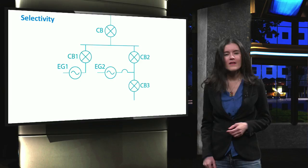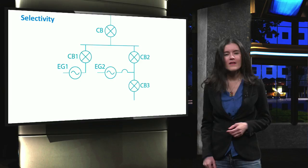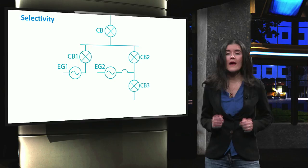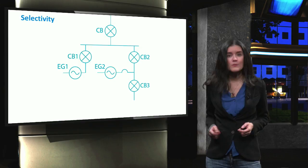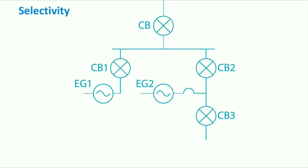The second criterion is selectivity. Once our protection devices are correctly tuned, we want the protection scheme to only isolate the faulted part of the grid. This must be ensured in order to minimize the possible negative impacts of the fault on the rest of the grid. In this example, a fault occurs in the lower part of the system. When the short circuit currents injected by the generators in the system start flowing, a correct operation would lead to the disconnection of circuit breaker number 3.